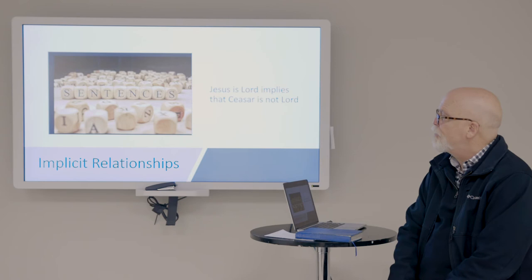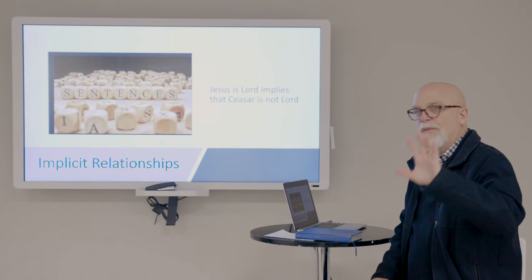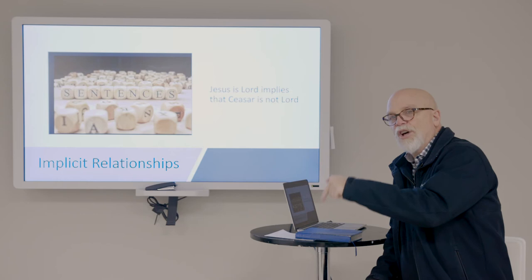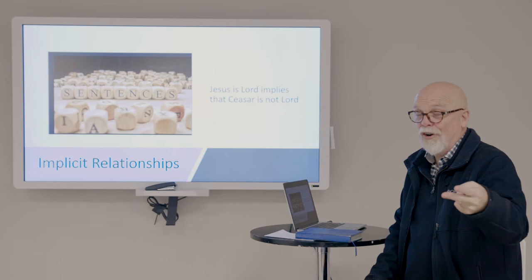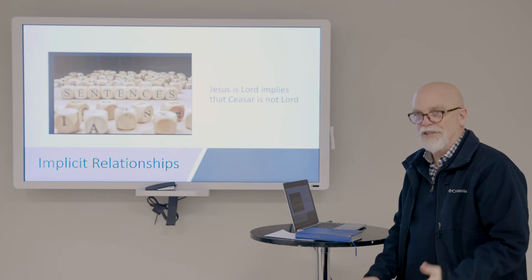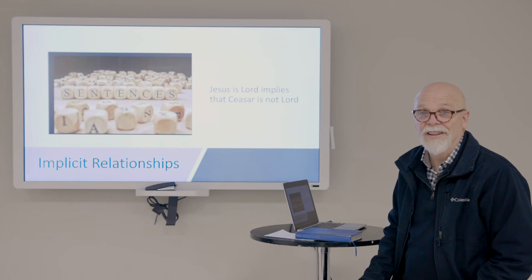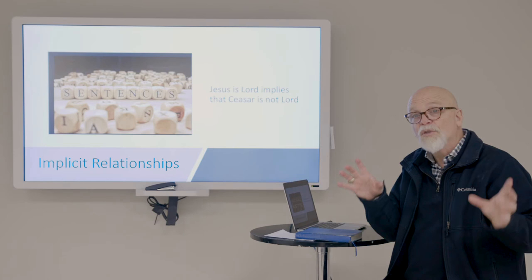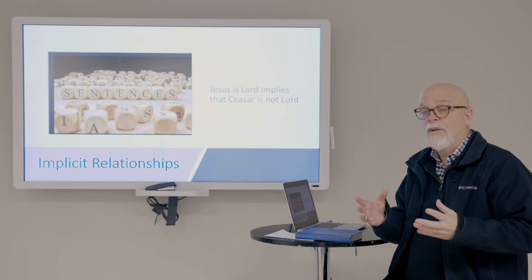There are direct relationships like those we just looked at, and then there are more implied relationships. When Paul makes a statement like 'Jesus is Lord,' there's an implied meaning that goes along with it — though he doesn't say it directly, what he's implying is something like 'Jesus is Lord and Caesar is not.' It's not only what he says but what he doesn't say. We need to look at implied relationships as well: what did he say, what did he not say, and what are the implications?